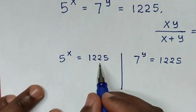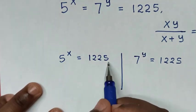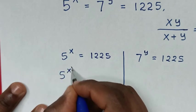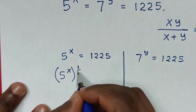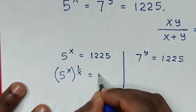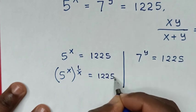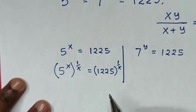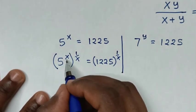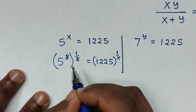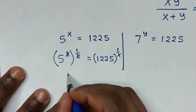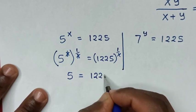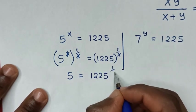From the first solution, we will power by 1 over x in both sides. It will be 5 power x, bracket power 1 over x, is equal to 1225 bracket power 1 over x. To simplify, this x will cancel this x. So it will be 5 power 1, which is the same as 5, is equal to 1225 power 1 over x.